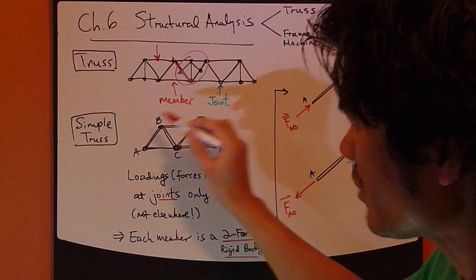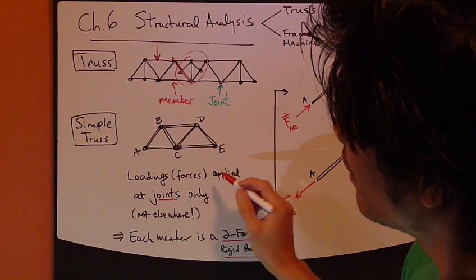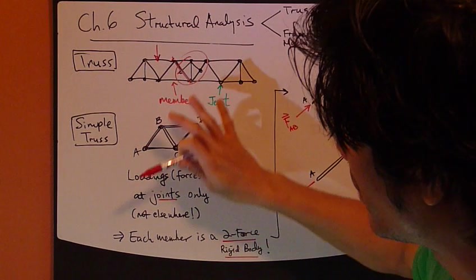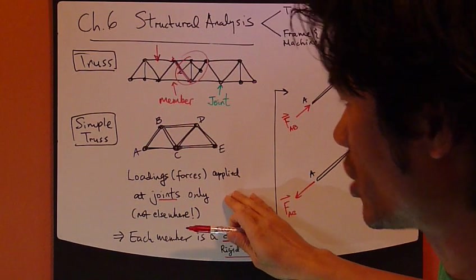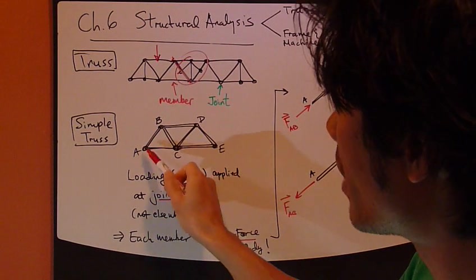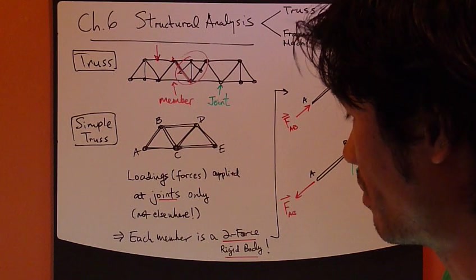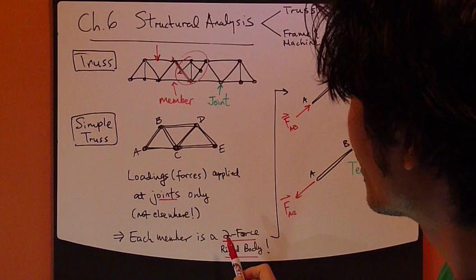A simple truss is where all the forces are applied at joint only. Here, I've labeled all the joints: A, B, C, D, and E. So based on this definition, the result is each member is a two-force rigid body, a two-force member.